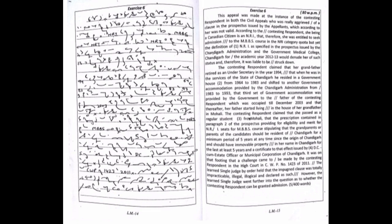The contesting respondent claimed that her grandfather retired as an Under Secretary in the year 1994. When he was in the services of the State of Chandigarh, he resided in a government house from 1964 to 1983 and shifted to another government accommodation provided by the Chandigarh Administration from 1983 to 1993. The third set of government accommodation was provided by the government to the father of the contesting respondent, which was occupied till December 2003.